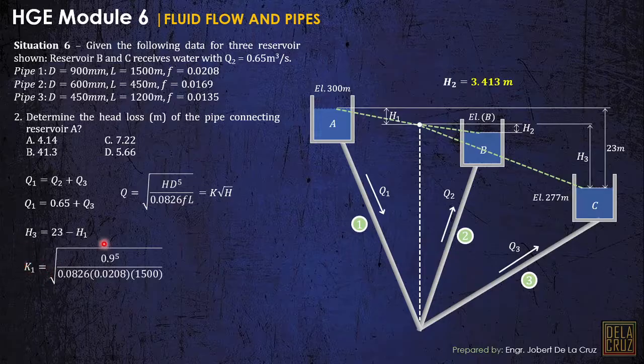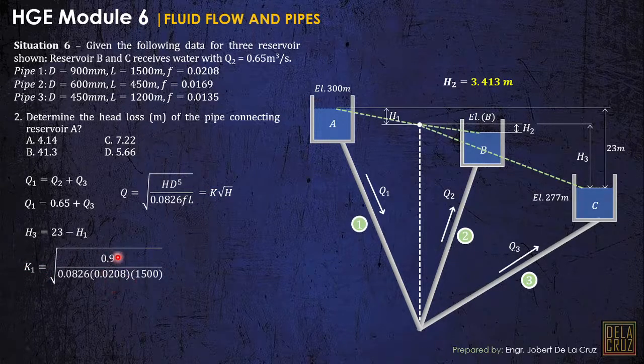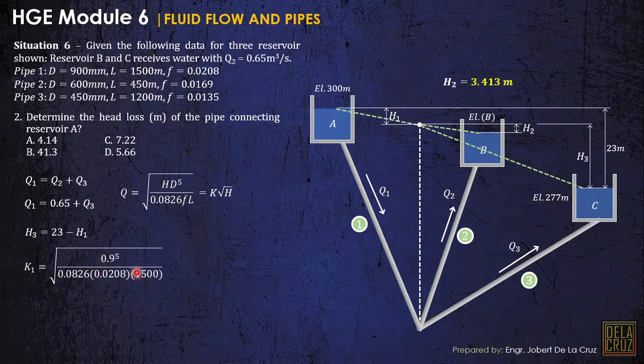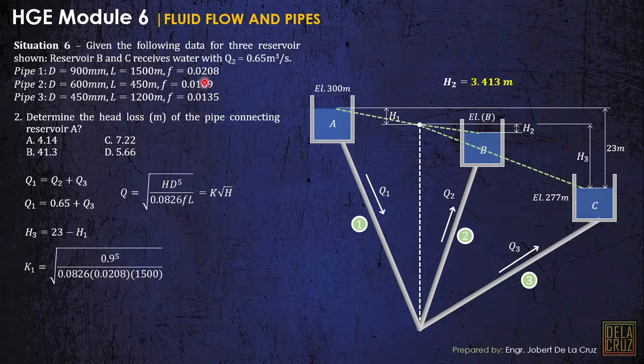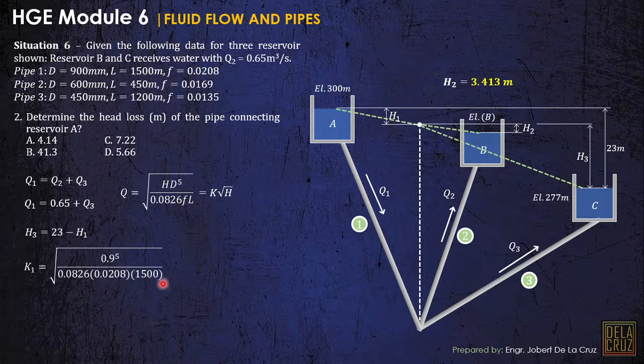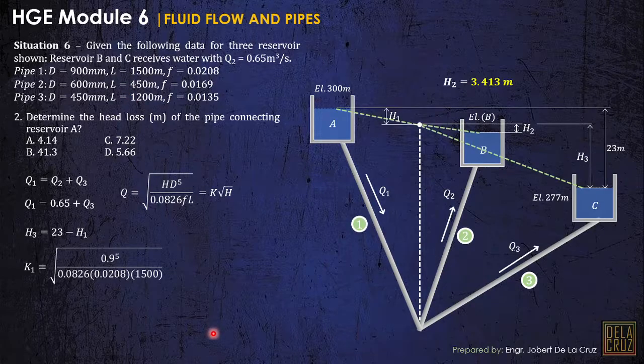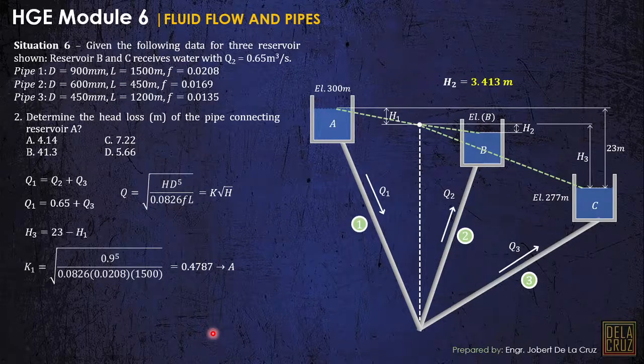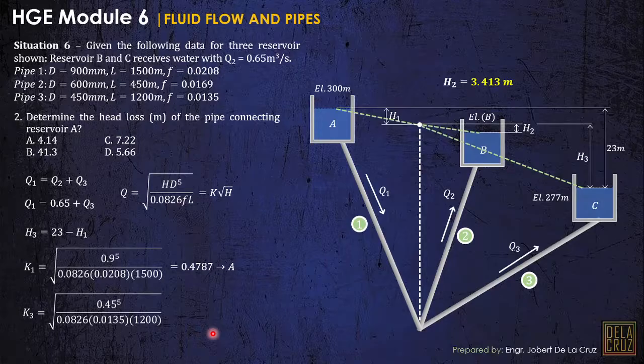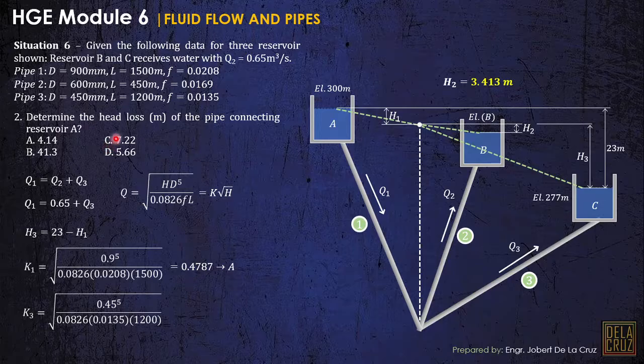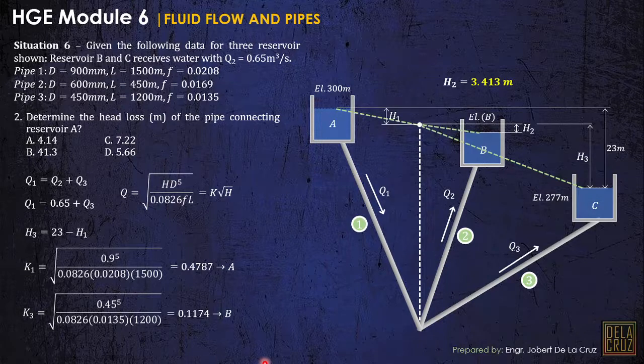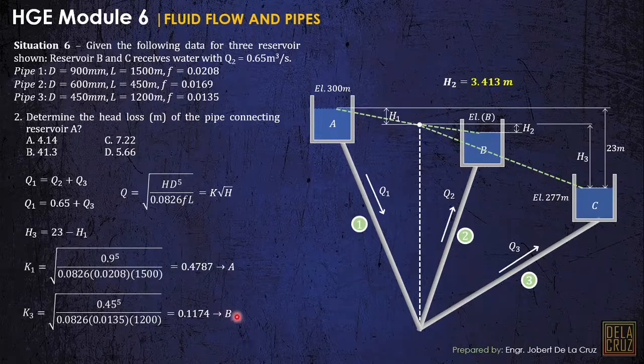Now I will calculate first the corresponding constant K on each pipe. That would be the diameter of pipe 1, 0.9, over 0.0826, the friction factors are not constant. The friction factor for pipe 1 is 0.0208, and the length for pipe 1 is 1500. And we have 0.4787, and I will store that to A using the calculator. And calculate the constant for 3, K sub 3, that would be the diameter at 3 over 0.0826 friction factor times its length 1200, and that is 0.1174. And I will store that to B.